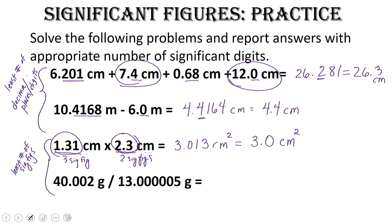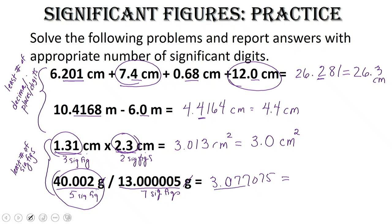The last problem: our first value has five sig figs, and our last value has seven sig figs. When we put everything into the calculator, we get 3.077075, and we don't have any units because the grams cancel. Which number has the least number of significant figures? The first value — it's five — so our answer must have five sig figs. So it's going to be 3.0771, because we round up that last digit to a one since the seven is greater than five.